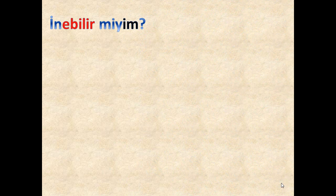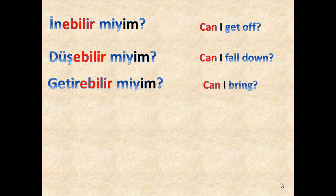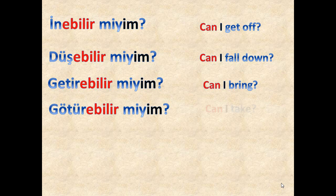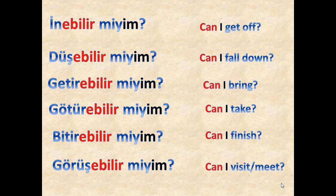Question form: 'İnebilir miyim?' — can I get off? 'Düşebilir miyim?' — this may mean 'is it possible for me to fall?' 'Getirebilir miyim?' — can I bring? 'Götürebilir miyim?' — can I take? 'Bitirebilir miyim?' — can I finish, may I finish, or is finishing possible? 'Görüşebilir miyim?' — can I visit or meet, or talk on the phone — that is also called 'görüşmek'.